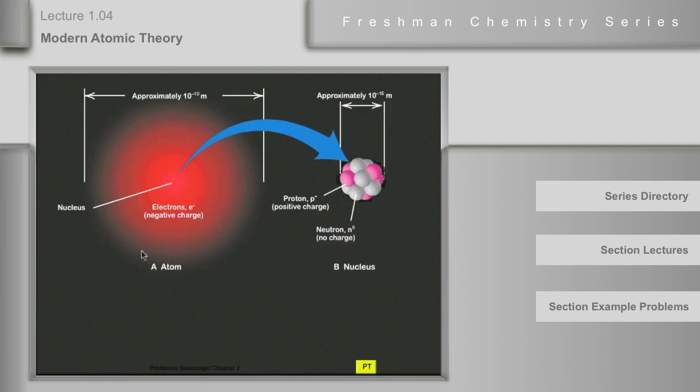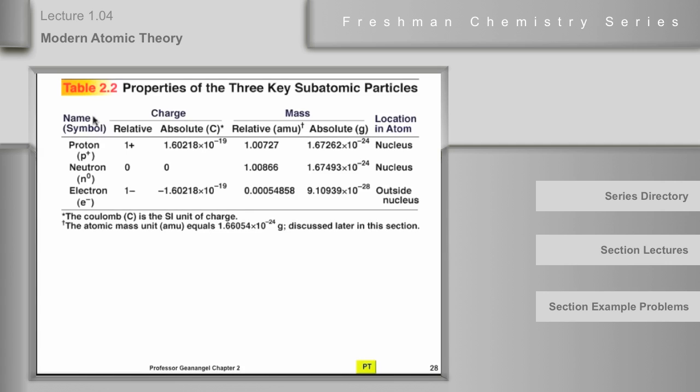So then we have three subatomic particles that, as chemists, we are most often working with. And Table 2.2 shows the properties of those. I want you to recognize the proton as P-plus, the neutron as N-zero, or just N, the electron as E-minus, the relative charges are 1-plus, or the absolute charge is 1.6 times 10 to the minus 19th Coulombs. And the neutron has zero charge, the electron has a negative 1 charge.